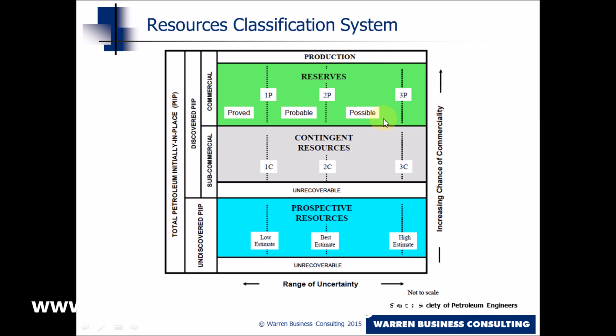The next category is contingent resources. Contingent resources is oil and gas that has been discovered by a well, but is not yet ready to be developed. These resources might be contingent on developing a new technology, or finding a market for the oil and gas, or perhaps doing further data gathering or further data evaluation.